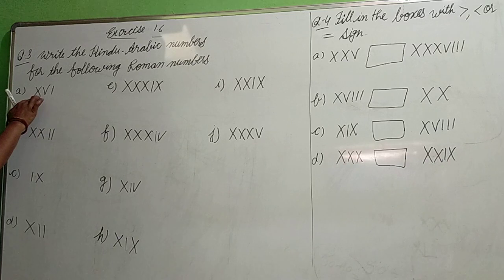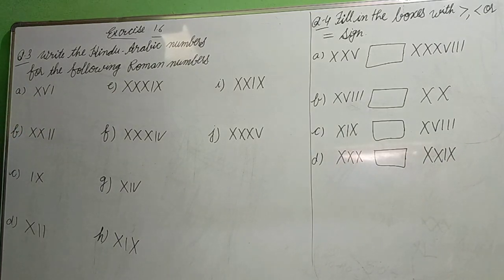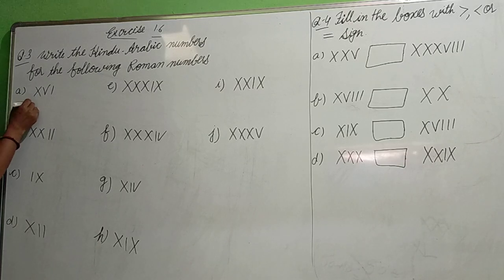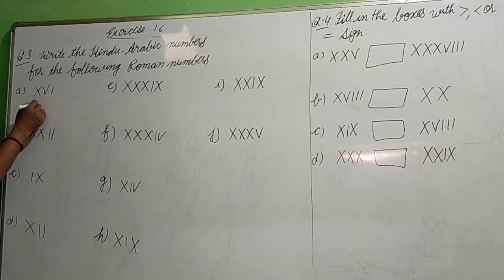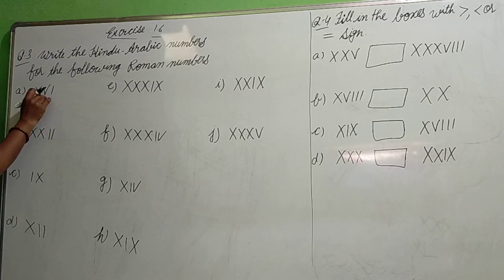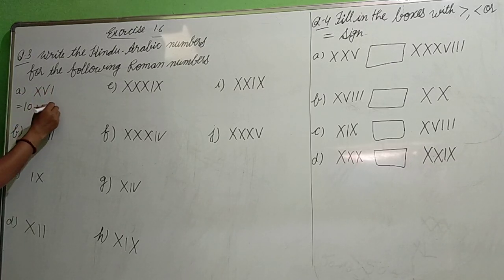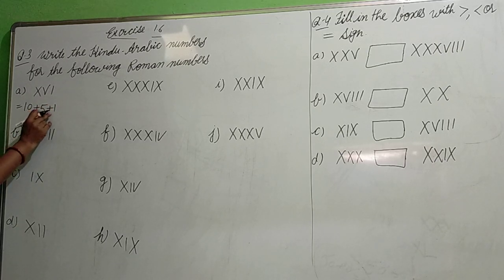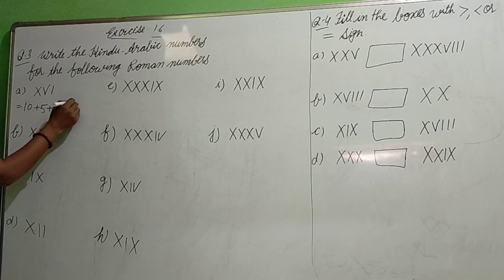Now X is given. X represents 10, V represents 5. So 10 plus 5 is 15, and 15 plus 1 is 16.